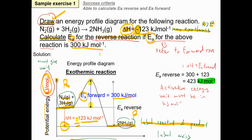Next, we calculate the Ea for the reverse reaction. The reverse reaction goes from product to the peak. Since the forward reaction goes from reactant to product, the reverse reaction goes from product back to reactant — so the Ea for the reverse reaction is measured from the product up to the peak. After identifying this on the diagram, we can calculate it.